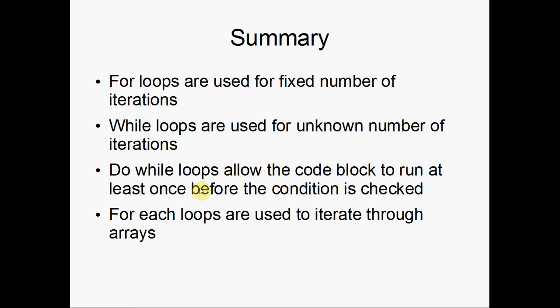For loops are used for a fixed number of iterations. While loops are used for unknown number of iterations. Do while makes the code execute at least once before the condition is checked. And for each loops are used to iterate through arrays.